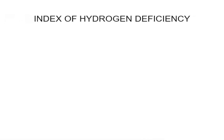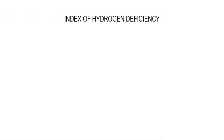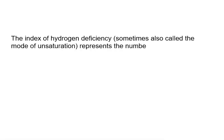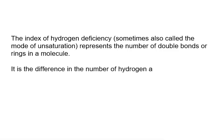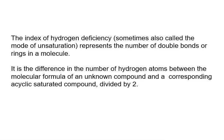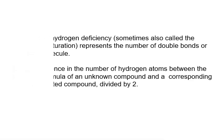Welcome to our channel. Today you'll learn about the Index of Hydrogen Deficiency (IHD). The index of hydrogen deficiency, sometimes also called the degree of unsaturation, represents the number of double bonds or rings in a molecule. It is the difference in the number of hydrogen atoms between the molecular formula of an unknown compound and the formula of a corresponding acyclic saturated compound, divided by two.